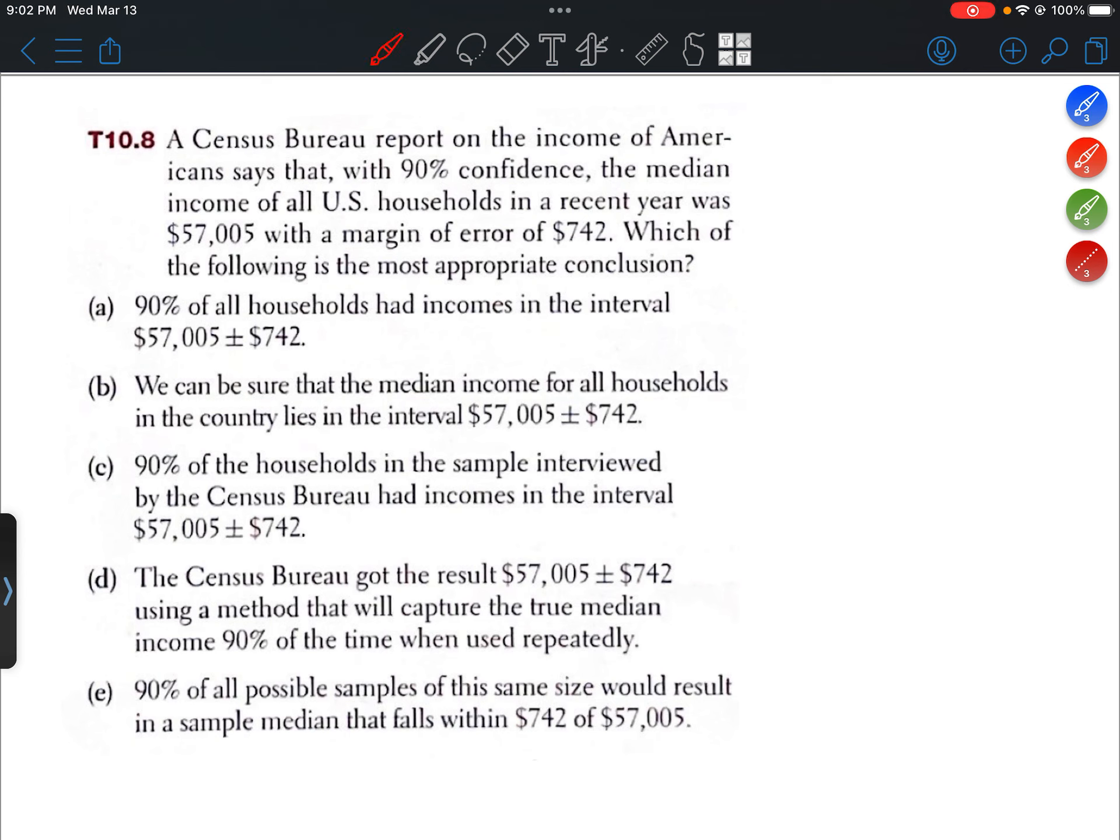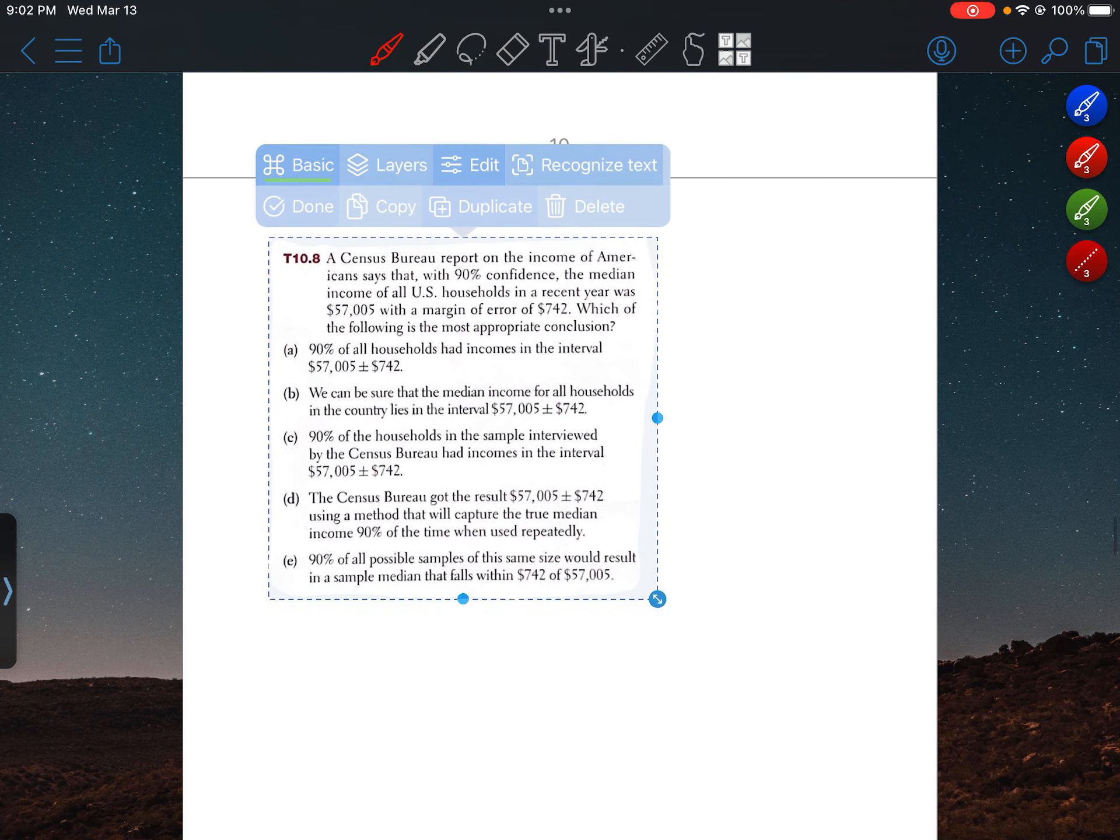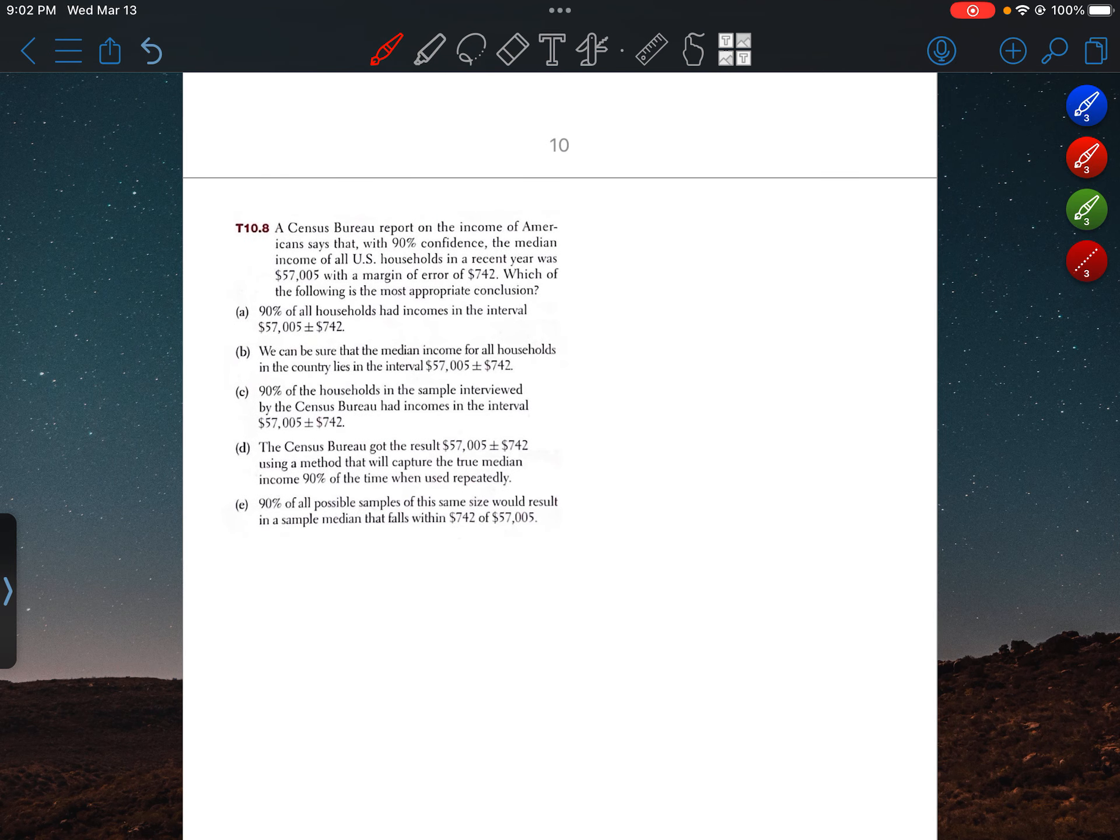All right. Choice A. 90% of all households had incomes in the interval... So just based off of the first answer choice, I can kind of tell that this question is asking us to interpret the confidence level.